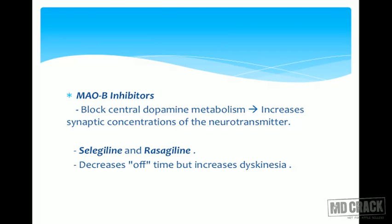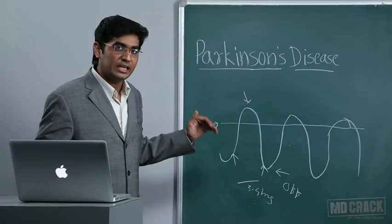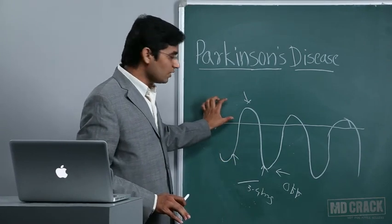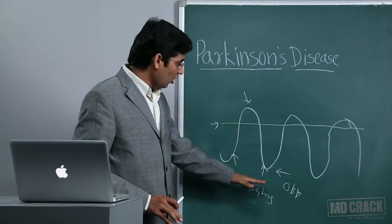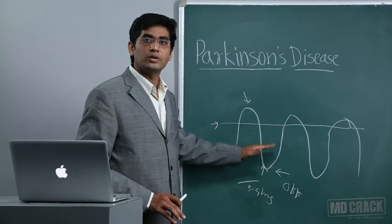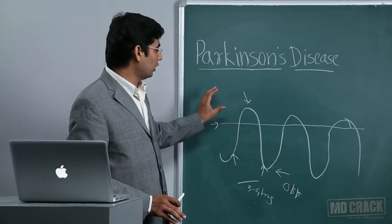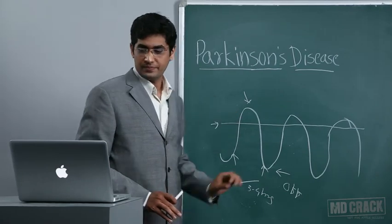MAO-B inhibitors block central dopamine metabolism and increase the synaptic concentration of dopamine. Examples are selegiline and rasagiline. They decrease off time but increase dyskinesia — because decreased dopamine degradation raises dopamine levels. So there is a positive effect on the off period, but the chances of dyskinesia increase.